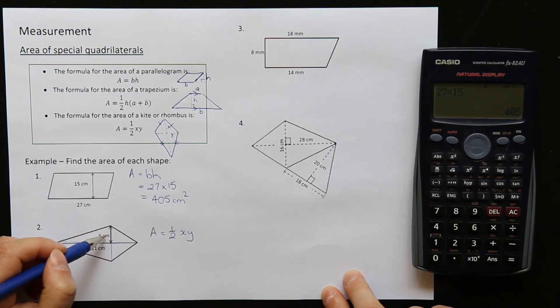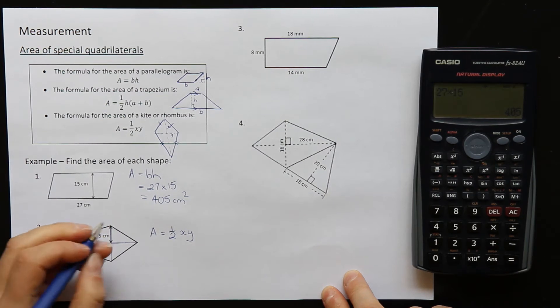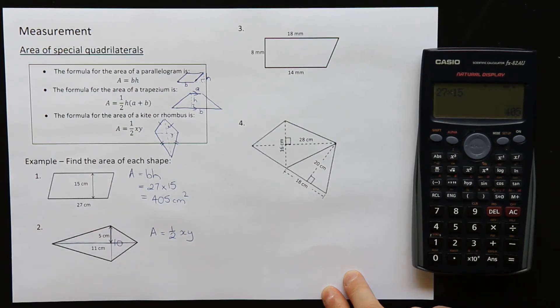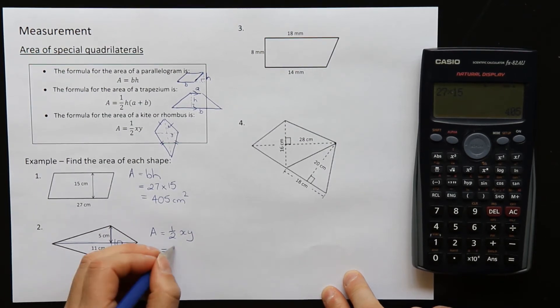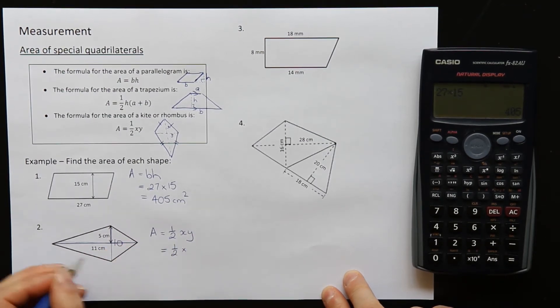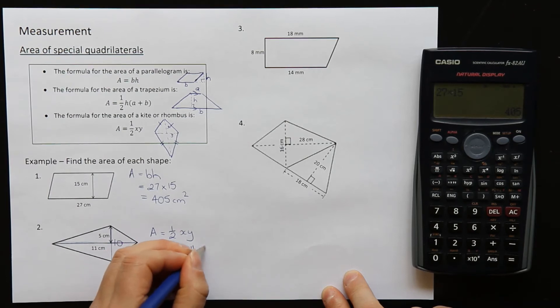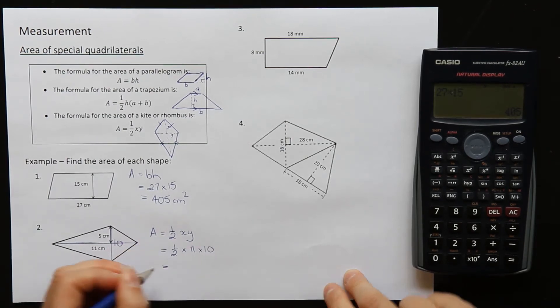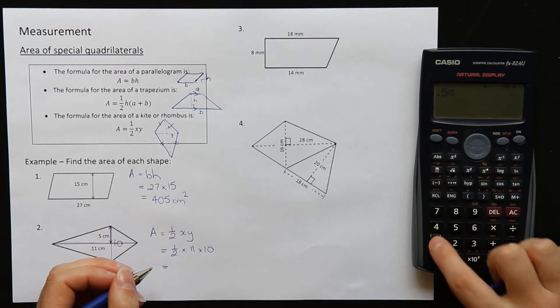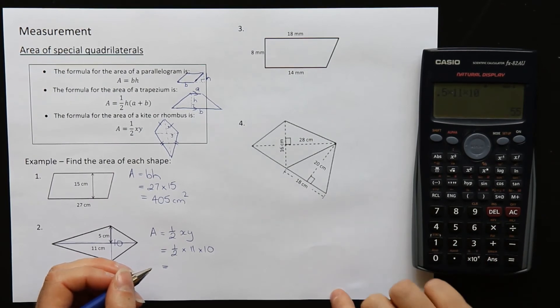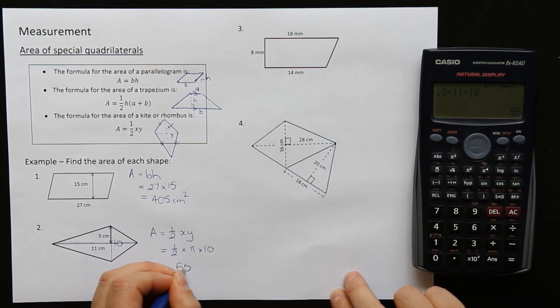Now I'm only given 5. I'm only given halfway, so I actually need to double that and use 10 for the whole way across. So A is equal to half times by 11 times 10. Half times 11 times 10 is 55 centimeters squared.